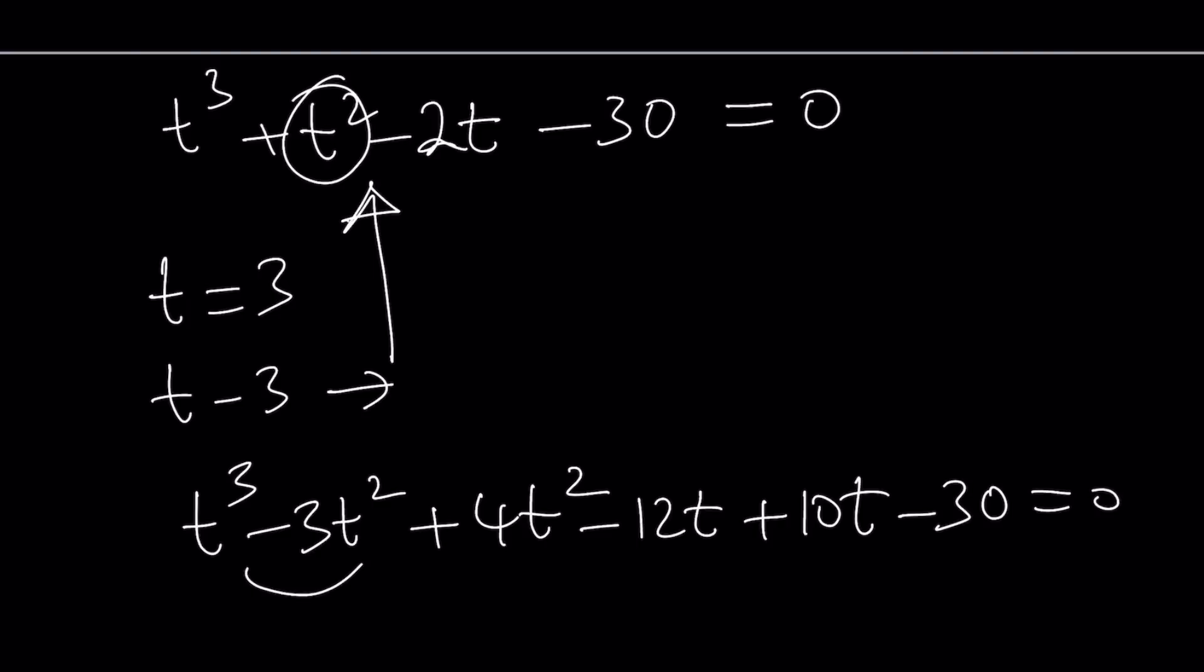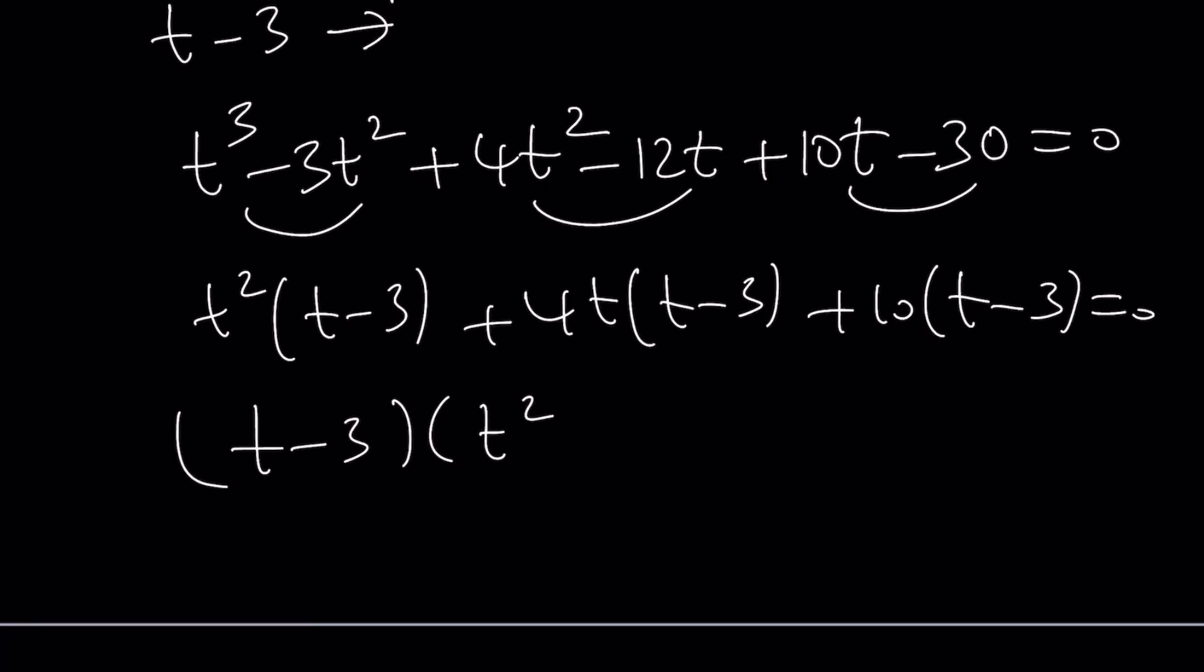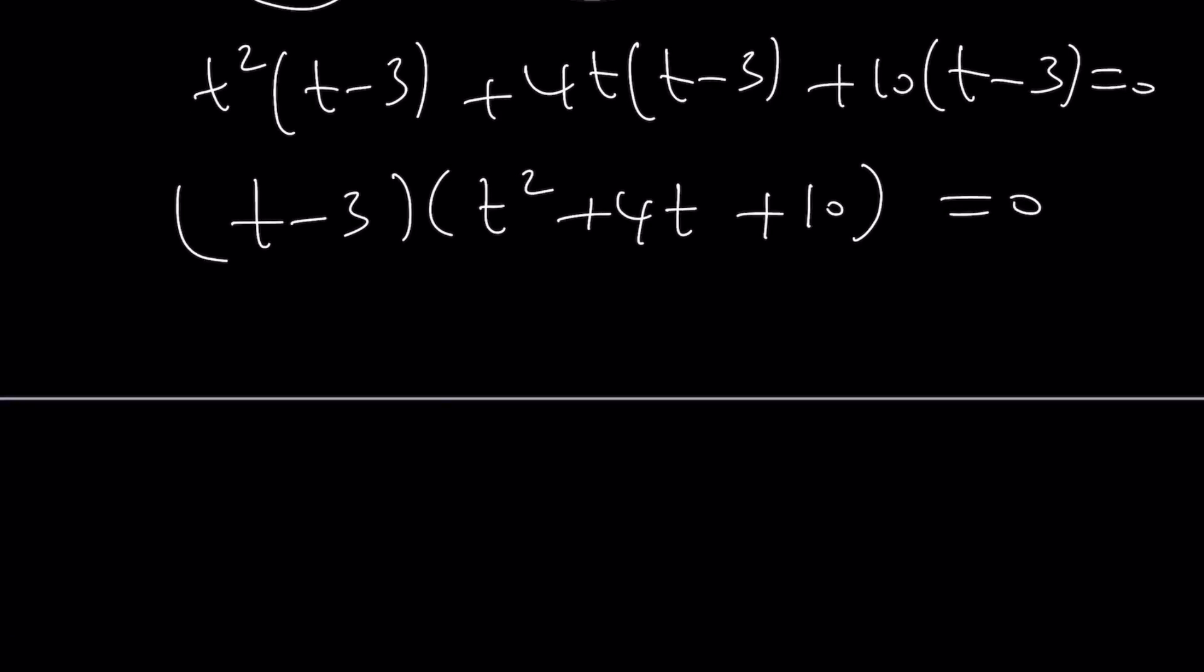Awesome. Now factoring by grouping is going to give you t squared times t minus 3, 4t times t minus 3. And of course, this shouldn't be a surprise, right? t minus 3 is a factor. We knew that all along, but we wanted to find the other one. And guess what? This is not going to give you any real solutions. But what is t? Let's go ahead and find out what happens after that.